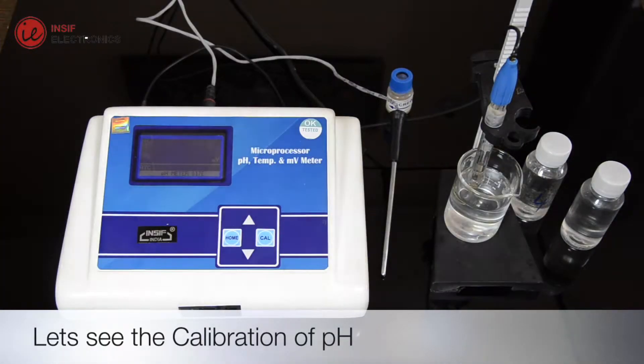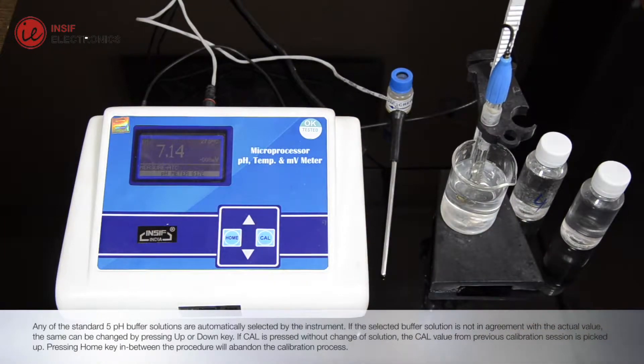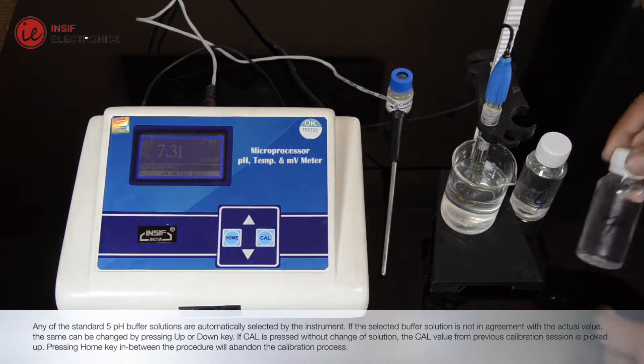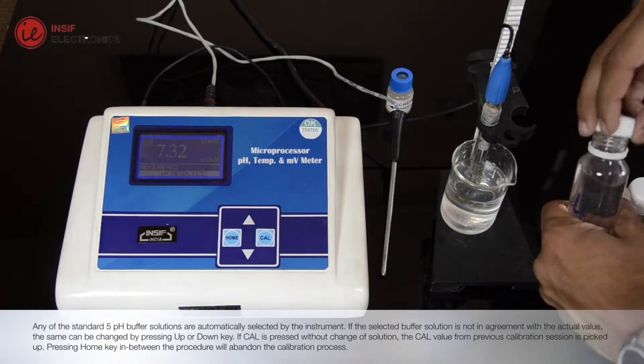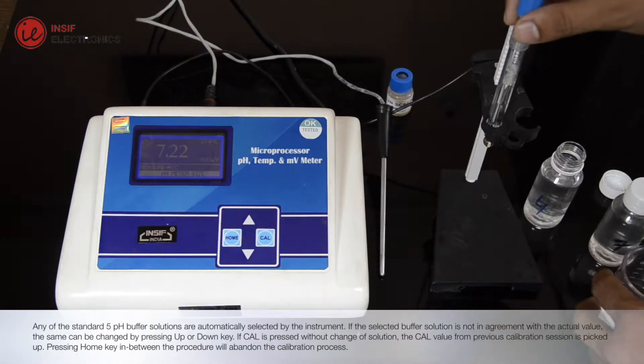Let's see the calibration of pH meter. Any of the standard 5 buffer solutions are automatically selected by the instrument. If the selected buffer solution is not in agreement with the actual value, the same can be changed by pressing up or down key.